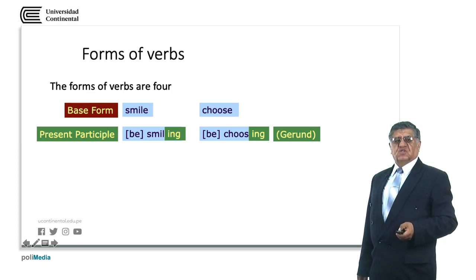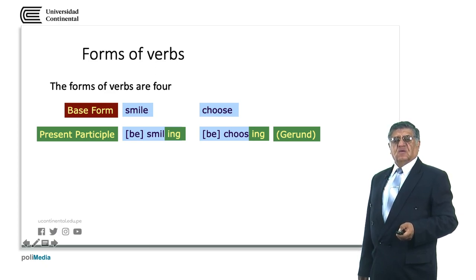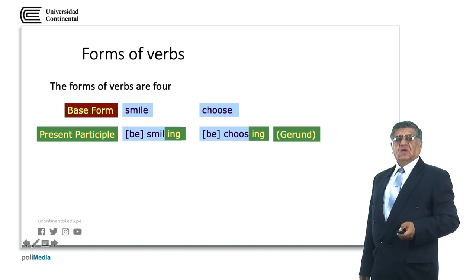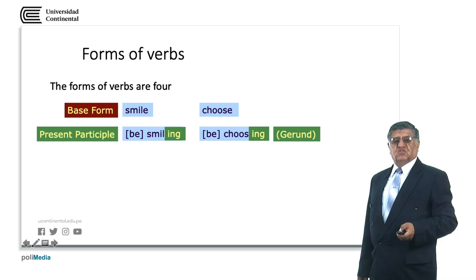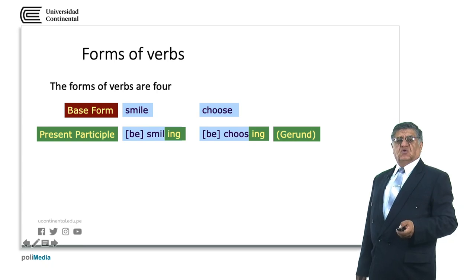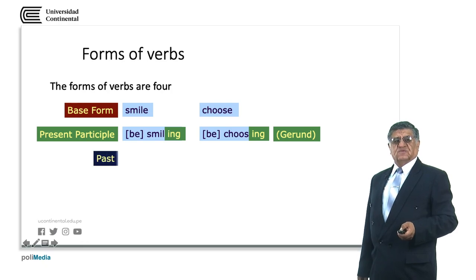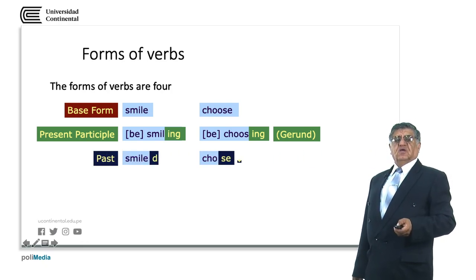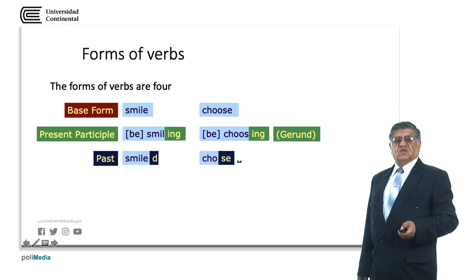Sometimes the -ing form is expressed with a preceding form of the verb to be: I'm smiling, is smiling, or are smiling. In the past tense, was choosing or were choosing. In the future, will be smiling or will be choosing. This form is also called the gerund. In the past tense we have: smile — smiled; choose — chose.